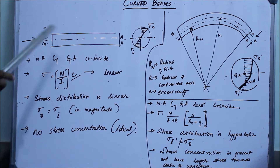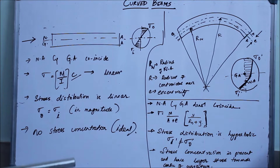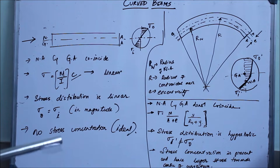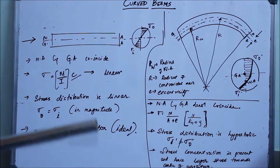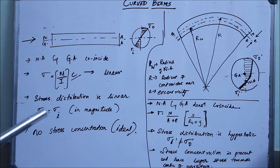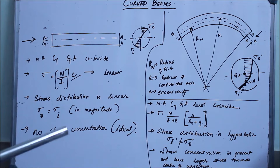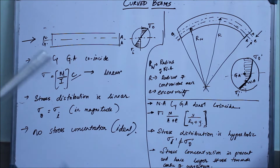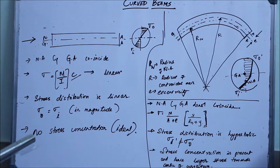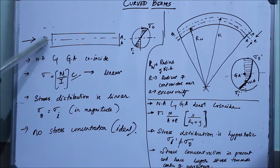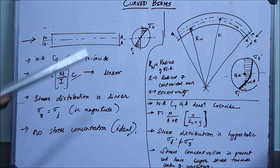In straight beams, there is something called a neutral axis where the stresses induced are zero — there is no stress at the neutral axis. There is also something called the geometrical axis or centroidal axis. In straight beams, before the bending moment is applied, the neutral axis and the geometrical axis coincide — they both lie on the same line. That is one of the main features.